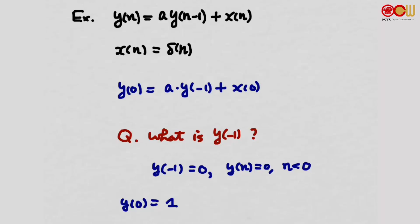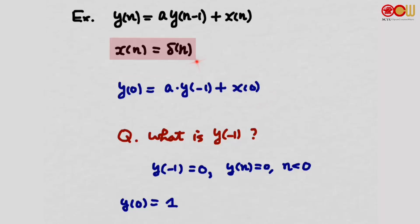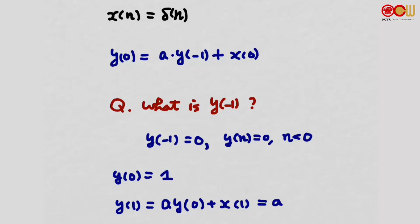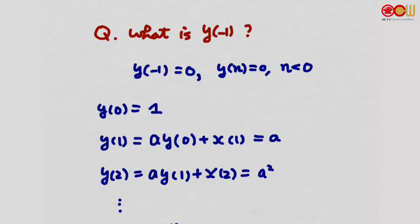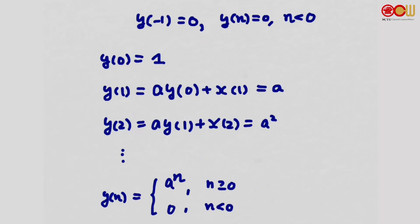So plugging in y(-1)=0 and x0=1 (since xn is the impulse), we get y0=1. Continuing, y1 = a·y0 + x1 = a·1 + 0 = a. Then y2 = a·y1 + x2 = a·a + 0 = a². Continuing in this manner, we can guess the general form: yn equals a raised to the power n for all n greater than or equal to 0, and 0 otherwise.